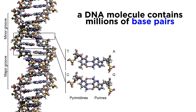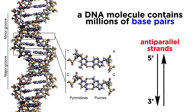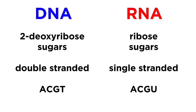These two strands are anti-parallel, meaning they run in opposite directions — one going from what we call the five prime end to the three prime end, whereas the complementary strand will go three prime to five prime. By contrast, RNA, which is comprised of ribose sugars rather than deoxyribose, will tend to be single-stranded, and we will learn about certain kinds of RNA later.